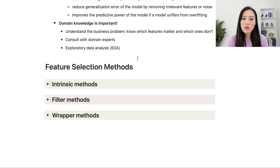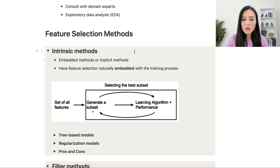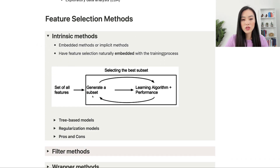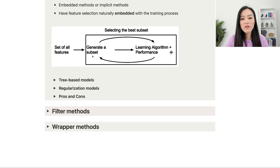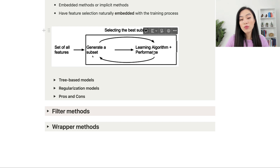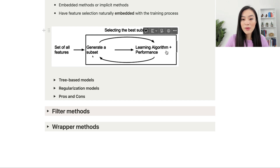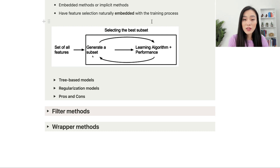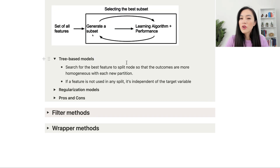The first category of feature selection methods is intrinsic methods, also called embedded methods or implicit methods. These methods have feature selection naturally embedded within the training process. From a set of all available features, a subset is generated, then a learning algorithm and performance evaluation help continue selecting the best subset. The idea is to leverage the learning algorithm to select features automatically without external tools.